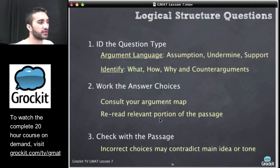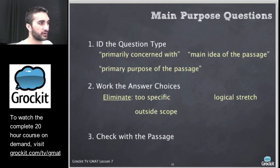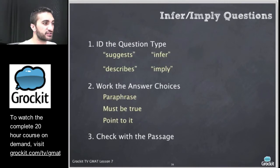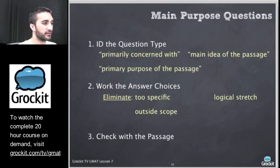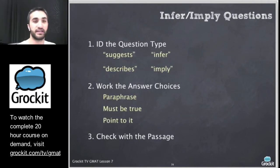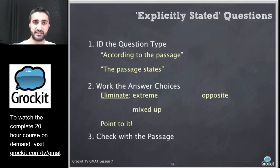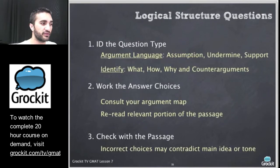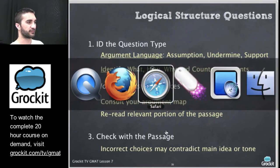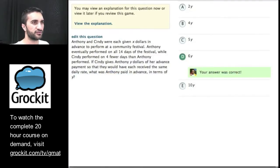Check with the passage. Incorrect choices may contradict the main idea or the tone. For main purpose questions, get rid of anything too specific or outside of scope. For infer or imply questions, find an answer choice that's essentially a paraphrase. On explicitly stated questions, they're detailed — we should be able to point to them. A lot of what we get out of these is working the wrong answer choices and identifying them. And then logical structure questions. And of course, we'll do some homework. Let's go ahead and jump into that.